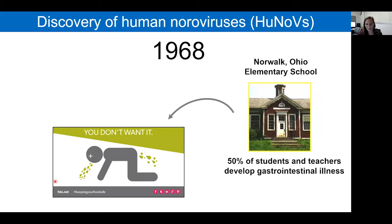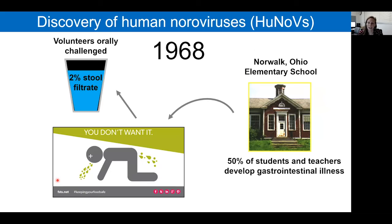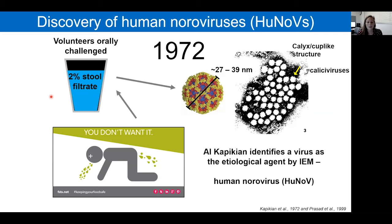The material from that outbreak was used to create a bacteria-free filtrate, and that filtrate was used to challenge volunteers. In 1972, Kapikian was able to use samples from that outbreak to identify, for the first time, a virus as an etiological agent for transmissible gastrointestinal disease by immune electron microscopy.